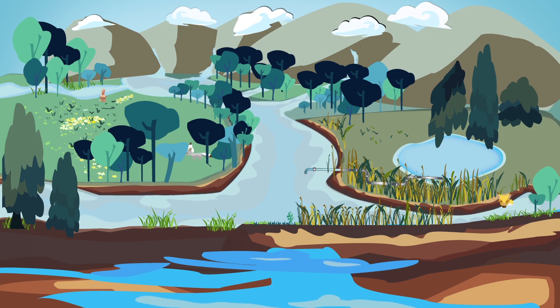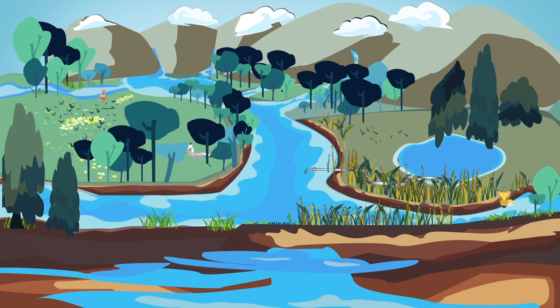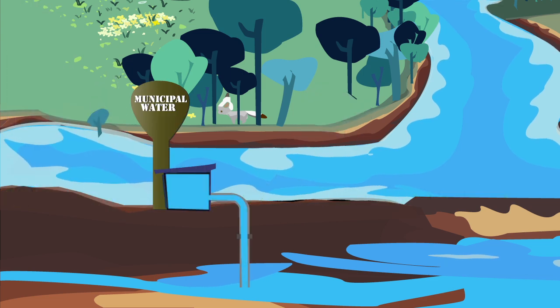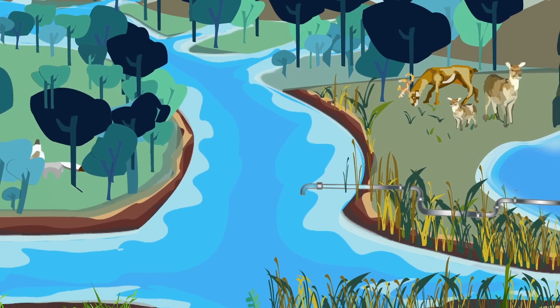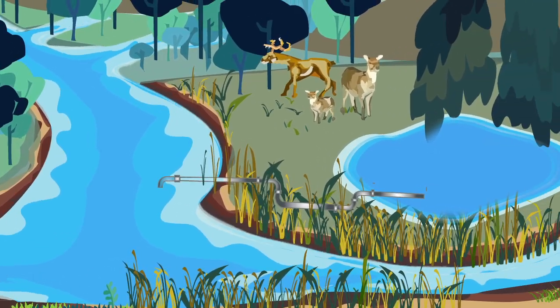Public water suppliers tap into these sources to provide us with our drinking water. No matter where our water comes from, it's affected by what happens on the land around it.